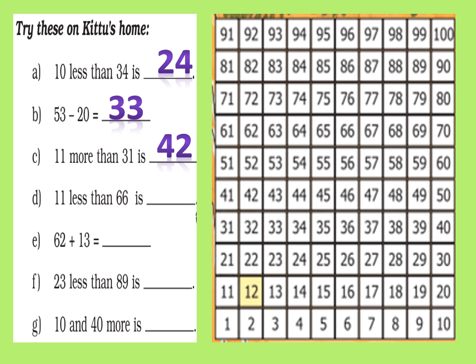For 11 less than 66, look at the number 66. 'Less than' means to subtract, so we jump one row down and reach 55. For 62 plus 13, look at the number 62, jump one row above, and then move three steps towards the right — we reach 75.